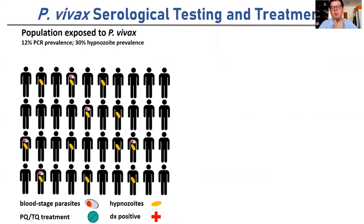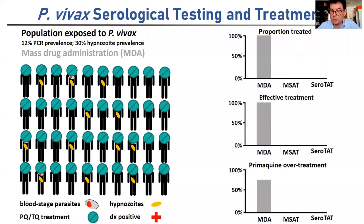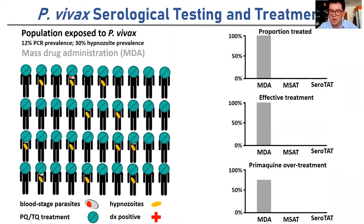The scenario is: if there's a population with some malaria infections, we want to identify the infected individuals and treat them so we can better control malaria and potentially eliminate it. One strategy is mass drug administration — you give primaquine to every individual in the population. While very effective, you're exposing a huge number of healthy and non-infected people to treatment with a dangerous drug, so there's quite a substantial amount of over-treatment.